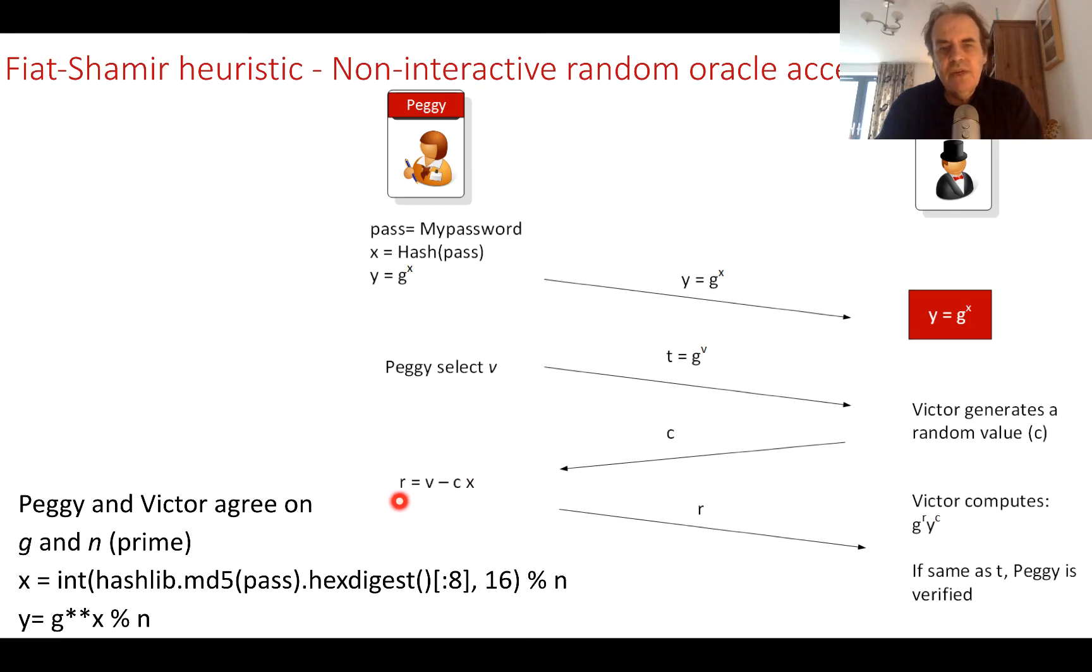She computes r equals v minus cx. Only she knows v and only she knows x, so it won't be possible for Eve to calculate the right value of r to come back. She sends r back again.